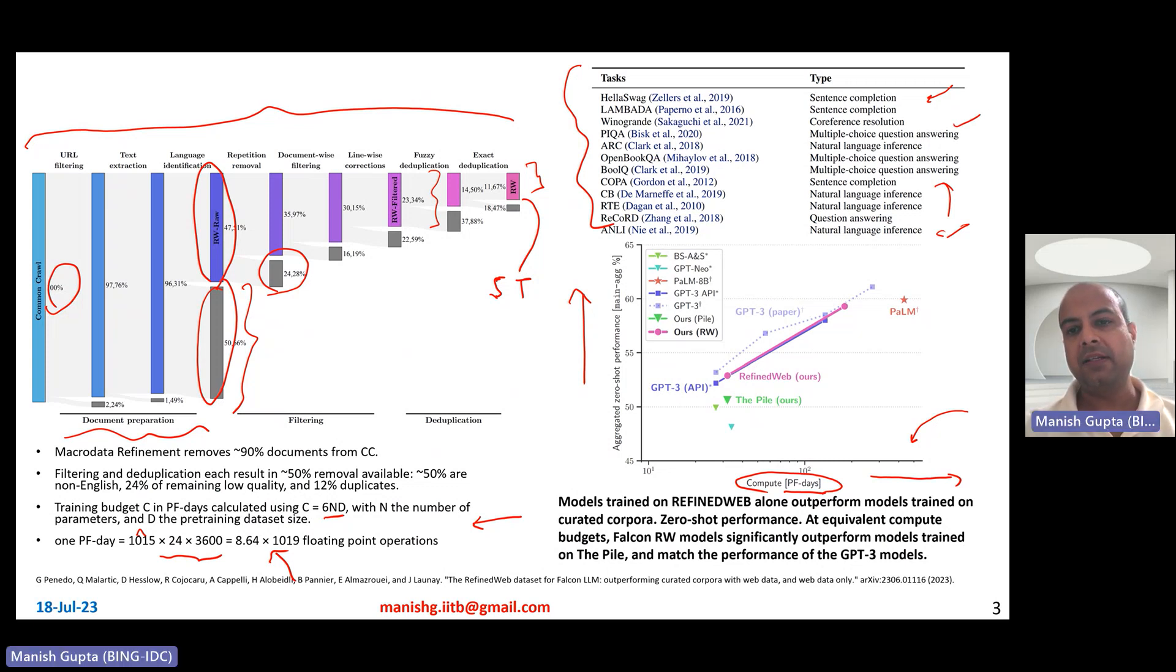What are the models that are being compared? Several models have been compared. The Falcon 1 billion and 7 billion kind of models. Then also the model using this pipeline, the macro data refinement pipeline, but on the pile corpus. And other things that have been compared are the Palm model, the GPT-3 model. And what you see here is that the refined web corpus essentially gives you reasonably good results. They are comparable to GPT-3. In fact, those results are better than the results that you can obtain using the pile corpus. And this is all zero-shot performance.